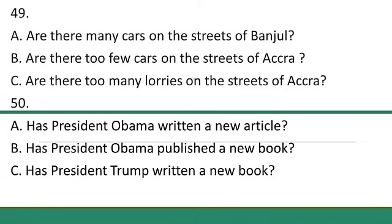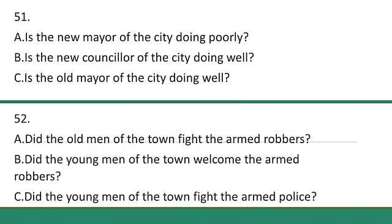Number 49: There are too many cars on the streets of Accra. Number 50: President Obama has written a new book. Number 51: The new mayor of the city is doing well. Number 52: The young men on the town fought the armed rabbits.